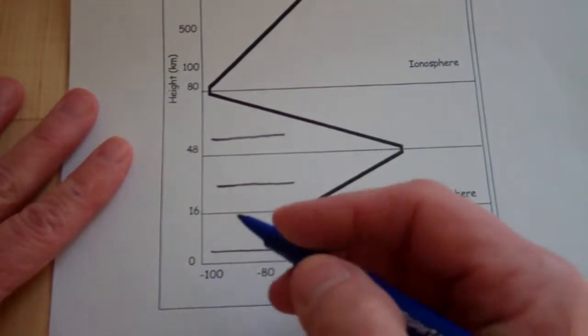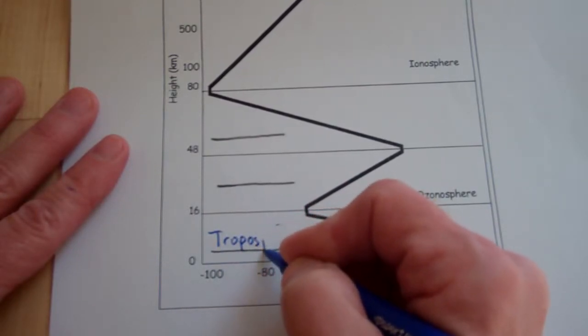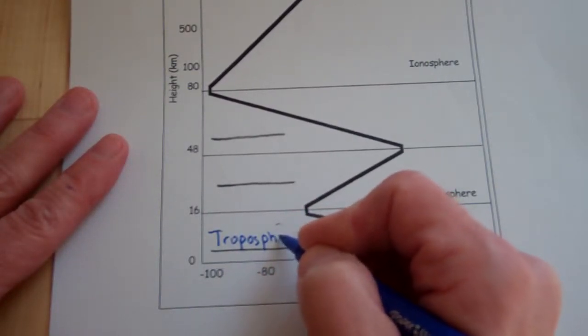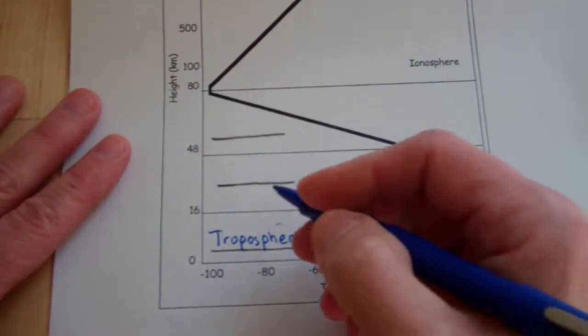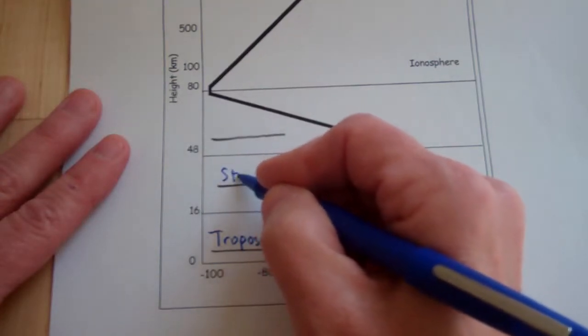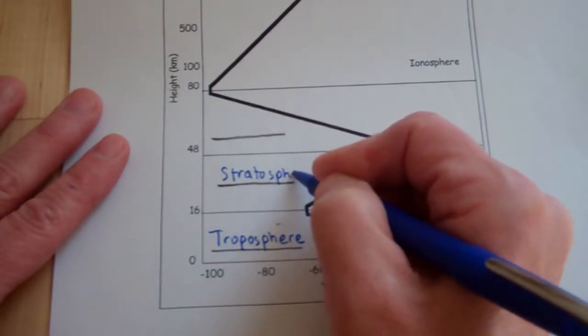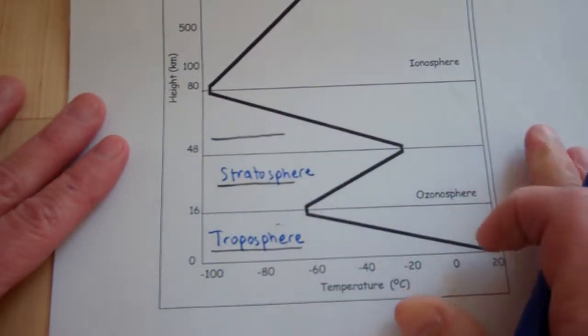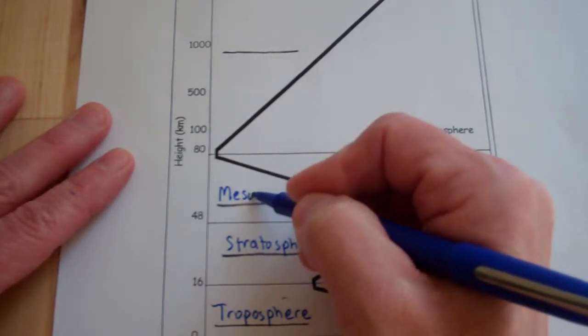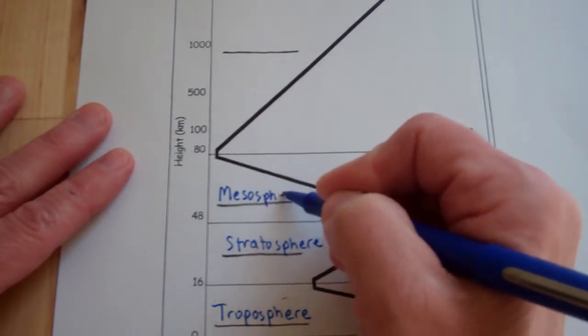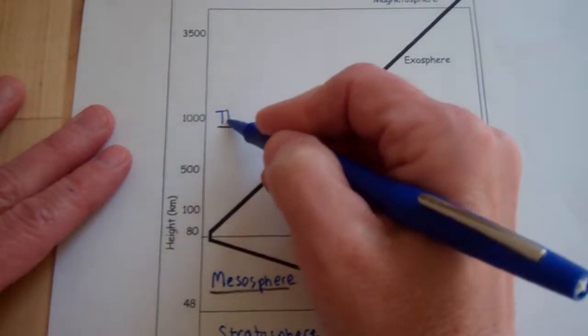The first layer of the atmosphere is called the troposphere. That's the layer that you live in. The next layer up is called the stratosphere. Above that is the mesosphere. And above that is the thermosphere.